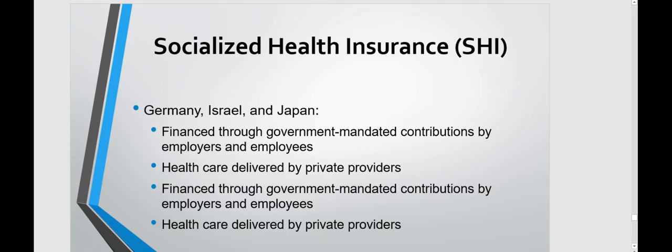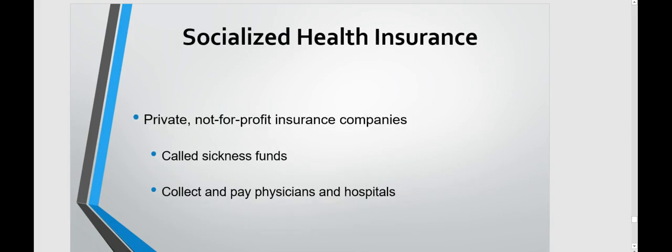The socialized health insurance system — found in Germany, Israel, and Japan — is financed through government-mandated contributions by employers and employees, while healthcare is delivered by private providers. Private not-for-profit insurance companies called sickness funds collect and pay physicians and hospitals. Be sure to go through the rest of the slides in the PowerPoint presentation for more detail.